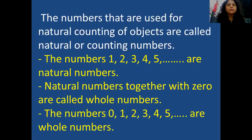The numbers that are used for counting of objects are called natural counting numbers. The numbers 1, 2, 3, 4, 5 and so on are natural numbers.